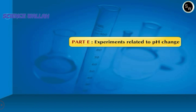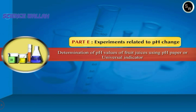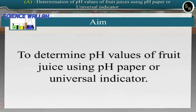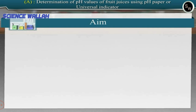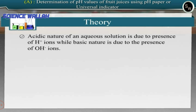Part E: Experiments related to pH change — determination of pH of fruit juices using pH paper or universal indicator. In this experiment, we determine the pH values of fruit juices using pH paper or universal indicator.